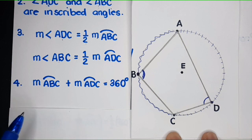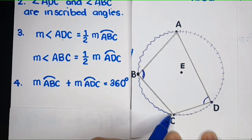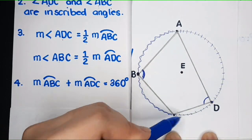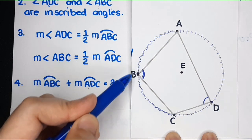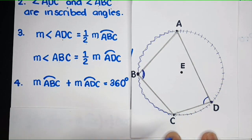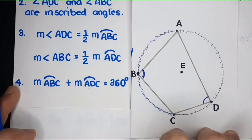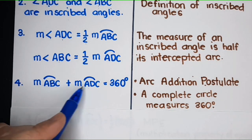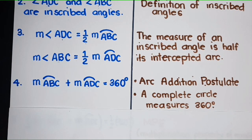Statement four: the measure of arc ABC plus the measure of arc ADC is equal to 360 degrees. These two arcs make a complete circle, and a complete circle measures 360 degrees. The reason is the arc addition postulate, because we add these two arcs, and a complete circle measures 360 degrees.